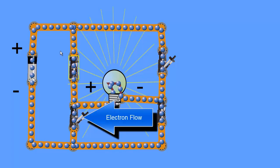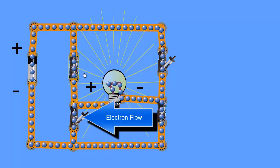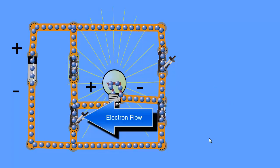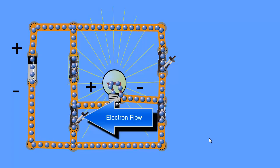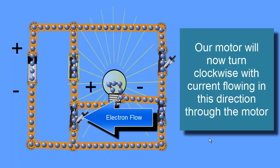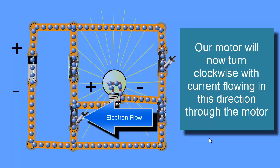So now we've lined up the positive terminal to this side of the load, and the negative terminal to the other side of the load, and now our current's flowing the other direction. And our motor would be reversing, going clockwise.